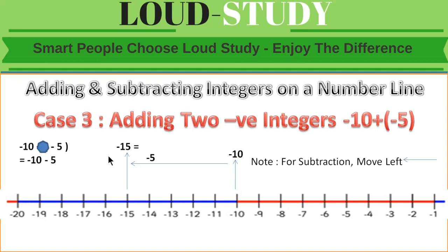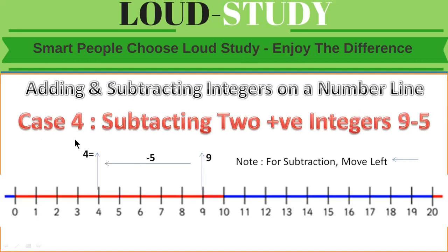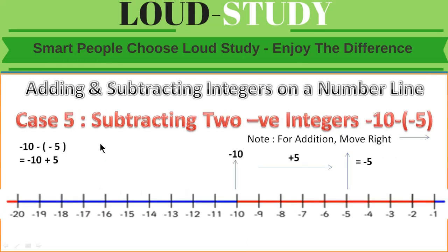Case 4: subtracting two positive integers. Suppose 9 minus 5. On the number line, 9 is marked. Since we are subtracting, we move left 5 steps: 1, 2, 3, 4, 5. Our answer is 4.